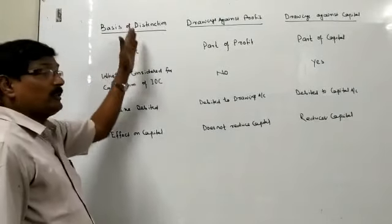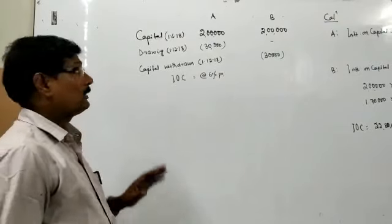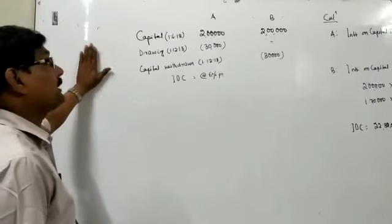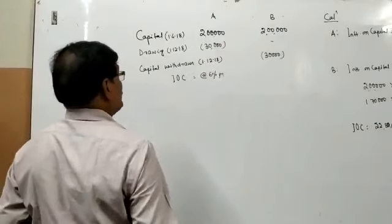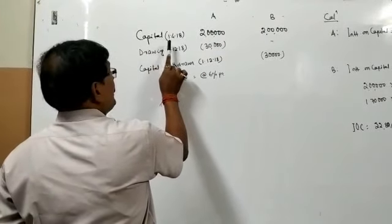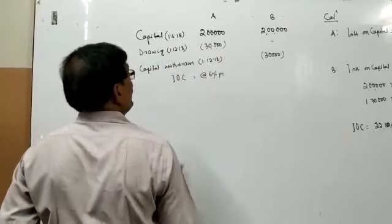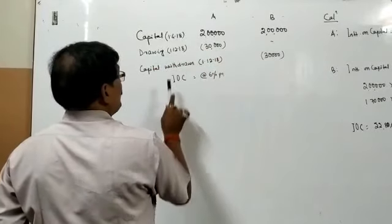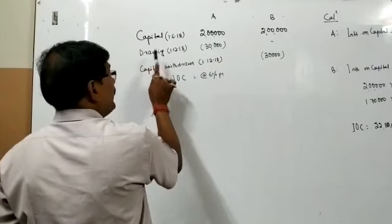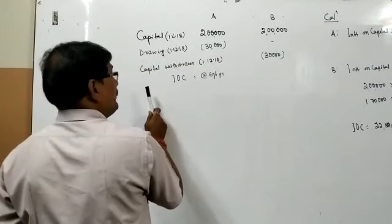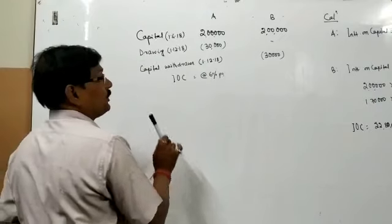Now let us explain this with an example — it will be more clear. Suppose A and B are two partners with initial capital as on 1st April 2018. On 1st December 2018, A made a drawing of 30,000 rupees, and on the same date B withdrew 30,000 rupees from his capital.